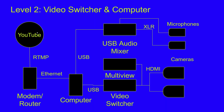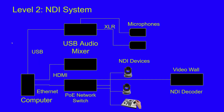You might also need a USB audio mixer — connect a couple of microphones and headsets into it. If your computer is struggling to handle all the video sources, you can bring cameras into a video switcher and use just one USB connection to the computer, which greatly reduces the processing load. That's another reason people use video switchers.